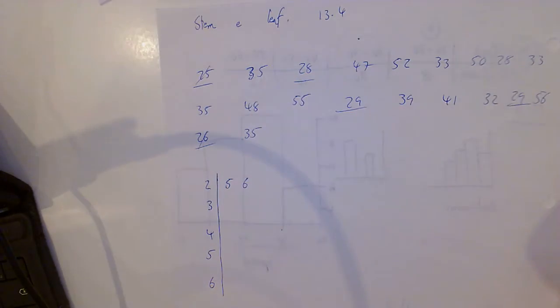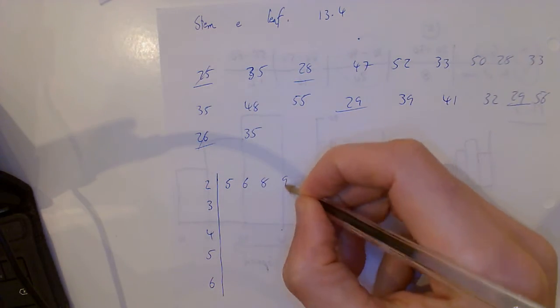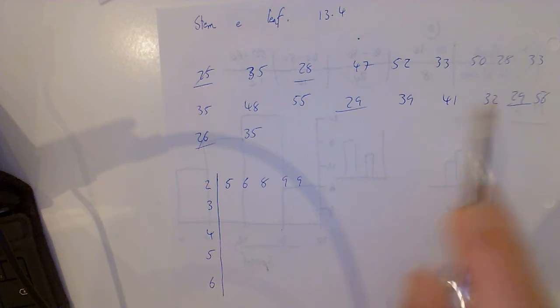I can cross those out as I go along. 8, 9, 9. I put in two nines because there's two 29s.